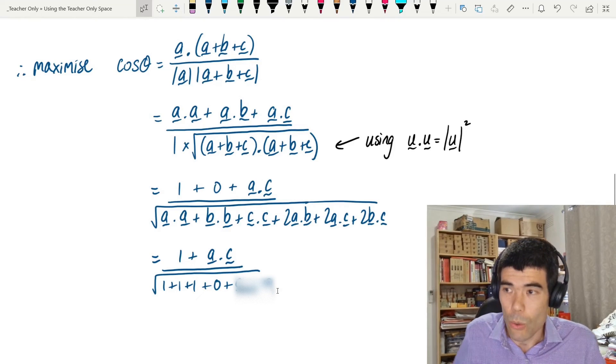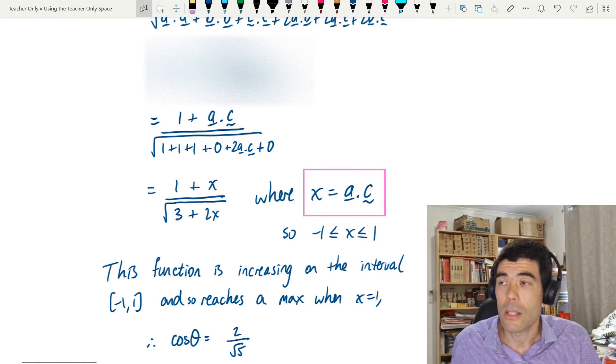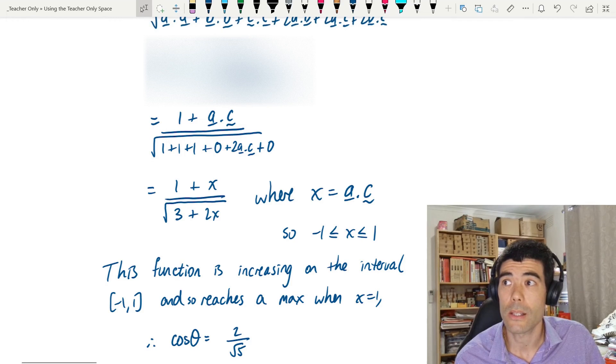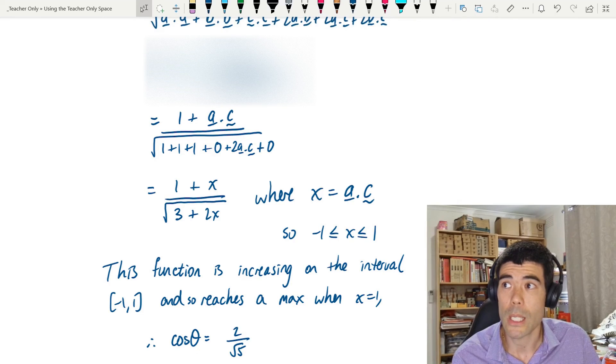So the only unknown quantity we have there is a dot c, so let's say we call that x. This then becomes 1 plus x over square root 3 plus x, and we want to maximize this quantity, find the value of x for which this is a maximum.